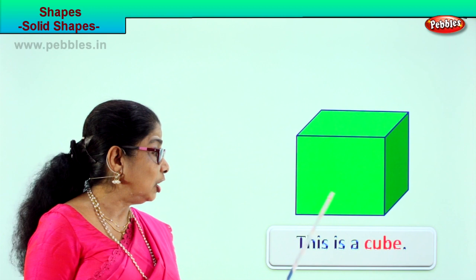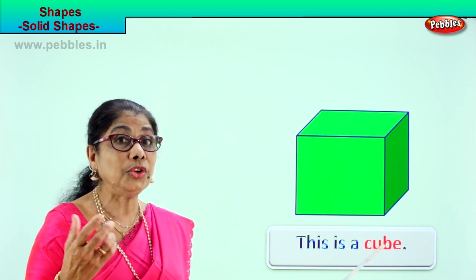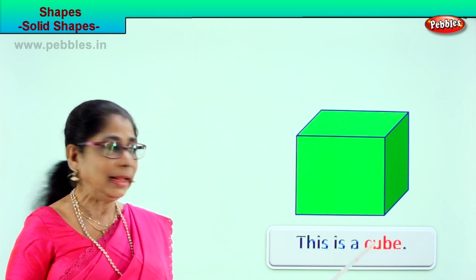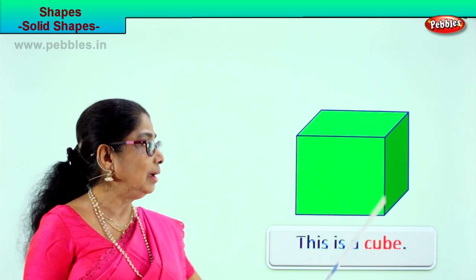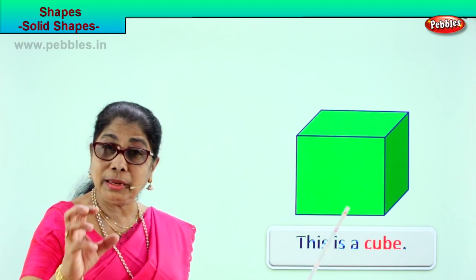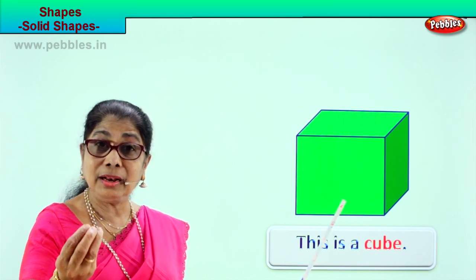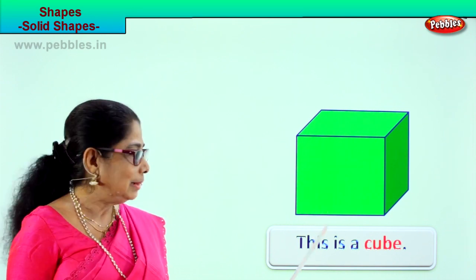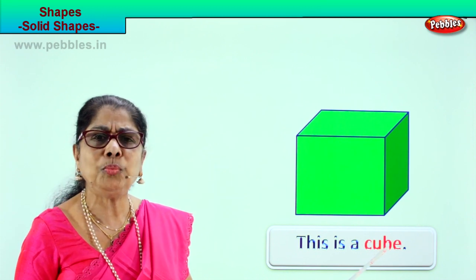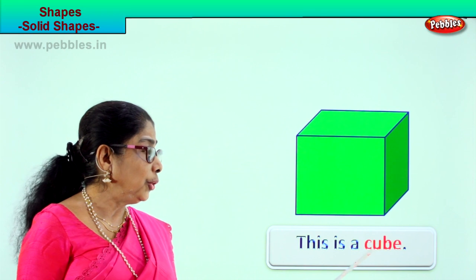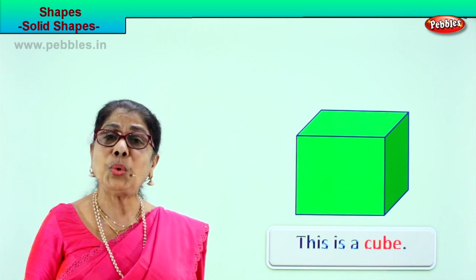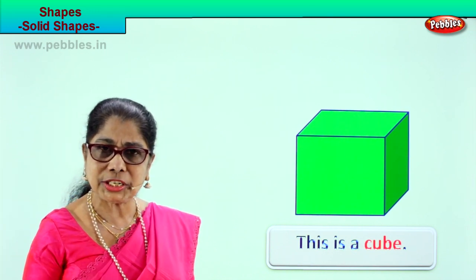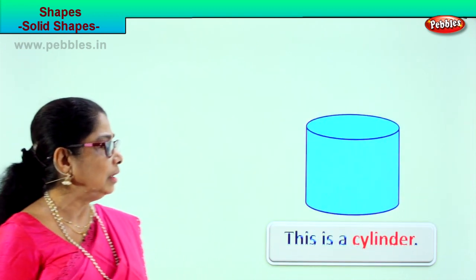Identify cubes in your house, in your games box, anywhere. This is not like a flat square — it is solid. Examples are your Rubik's cube and your dice. Now spell cube for me: C-U-B-E. This is a cube. Shall we look at another solid shape?